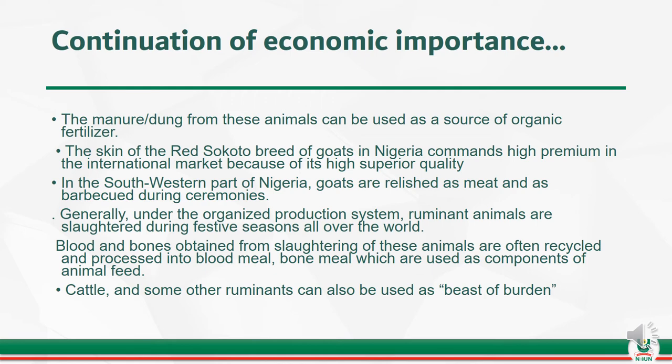Generally, under the organized production system, ruminant animals are slaughtered during festive seasons all over the world. Blood and bones obtained from slaughtering of these animals are often recycled and processed into blood meal and bone meal, which are used as components of animal feed. Cattle and some other ruminants can also be used as beasts of burden.